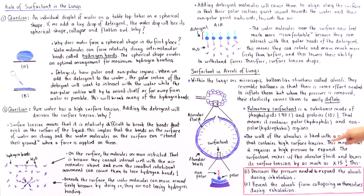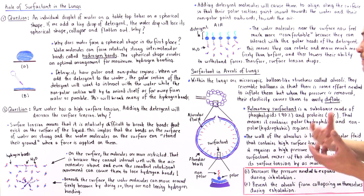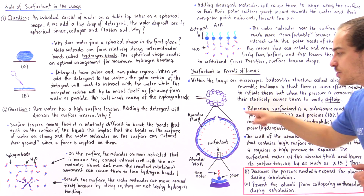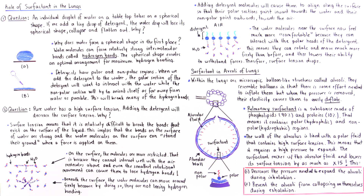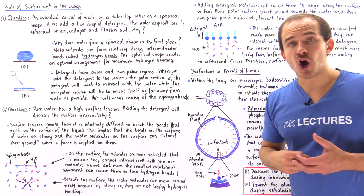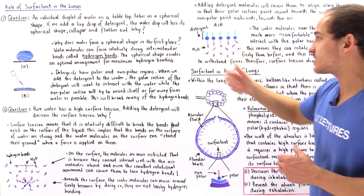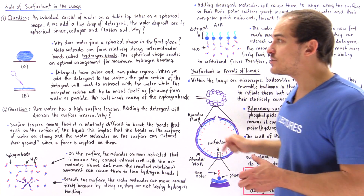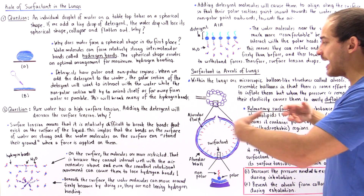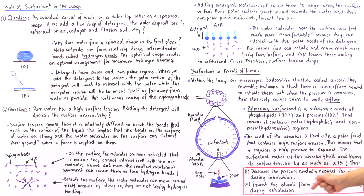The wall of the alveolus is lined with polar fluid that has a high surface tension, requiring a relatively high pressure to expand and inflate those balloon-like structures when we inhale. By mixing the surfactant into that fluid — and the surfactant is produced by a specialized type of cell inside the lungs known as alveolar type 2 cells — we decrease the surface tension, and by decreasing the surface tension we make it much easier to inflate those alveoli. This means we decrease the pressure needed to expand the alveoli during the process of inhalation.